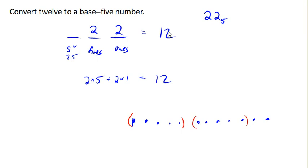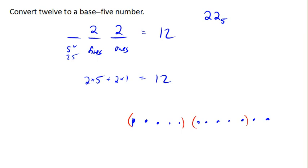Now, let's look at a slightly bigger number. So now let's try converting 69 to a base 5 number. And again, remember that these would be 1s, 5s, 25s.